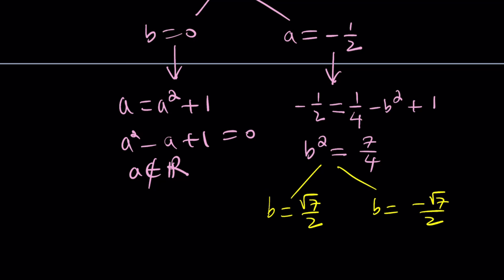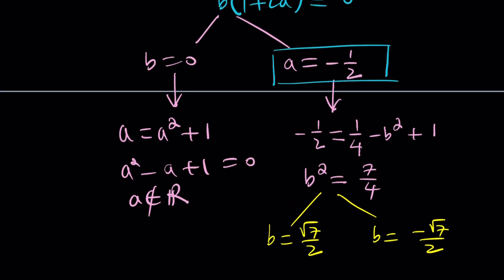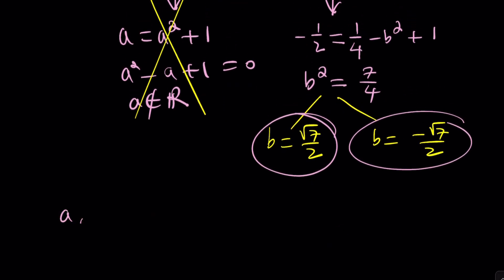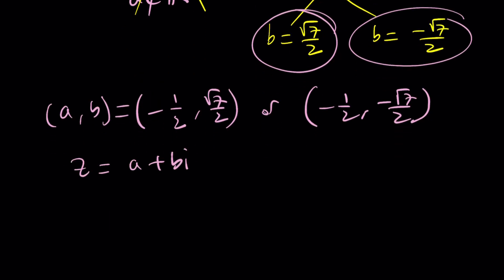And from here I should be getting two solutions. B is either square root of 7 over 2 or negative square root of 7 over 2. And this comes from A equals negative 1 half. You really need to keep track of things and keep your work organized. For example, B equals 0 did not give us anything meaningful so we had to discard it. Now we got these two results based upon the fact that A is equal to negative 1 half. Therefore we have two solutions. In other words, we have two ordered pairs: A comma B can be written as negative 1 half comma root 7 over 2 or negative 1 half comma negative root 7 over 2.